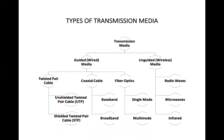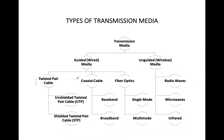The transmission media can be broadly categorized into two categories: guided and unguided. Guided media is also known as wired media, and unguided media is also known as wireless media. Guided media is further divided into twisted pair cable, coaxial cable, and fiber optics. Unguided media can be classified into radio waves, microwaves, and infrared.